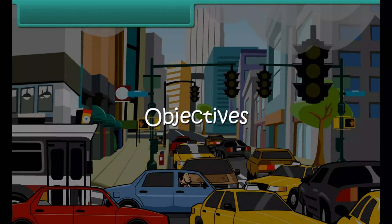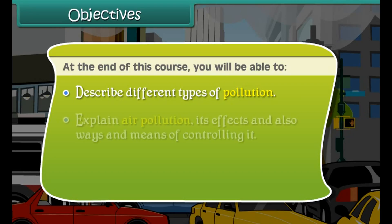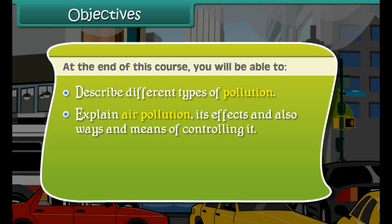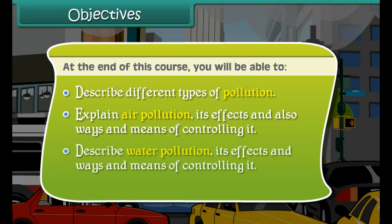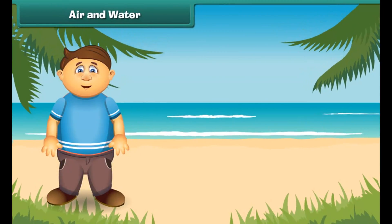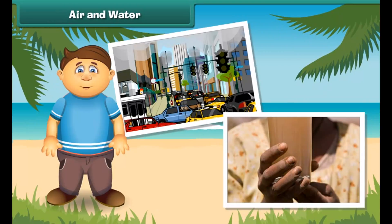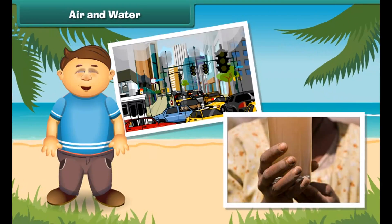At the end of this course, you will be able to: describe different types of pollution; explain air pollution, its effects, and ways and means of controlling it; describe water pollution, its effects, and ways and means of controlling it; and explain noise pollution and soil pollution.